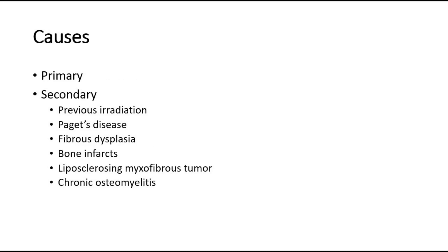The causes of osteosarcoma can be divided into primary and secondary causes. Primary cause is arising de novo. Secondary cause is arising in abnormal bone, and may be related to previous irradiation, Paget's disease, fibrous dysplasia, bone infarcts, or other causes such as chronic osteomyelitis.